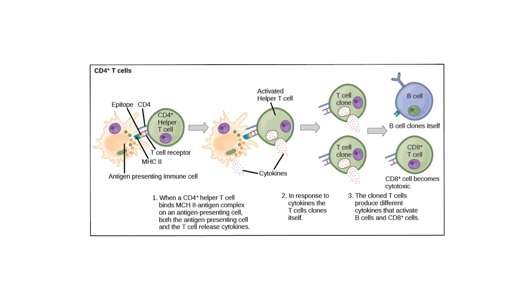T helper cells recognize MHC 2 molecules. If there is a non-self protein found in the MHC 2, a T helper cell can bind to that MHC 2 antigen complex, which activates the helper T cell. When the helper T cell is activated, it clones out, making activated helper T cell clones as well as memory helper T cells. Those activated helper T cells then produce cytokines that help activate B cells as well as cytotoxic T cells.